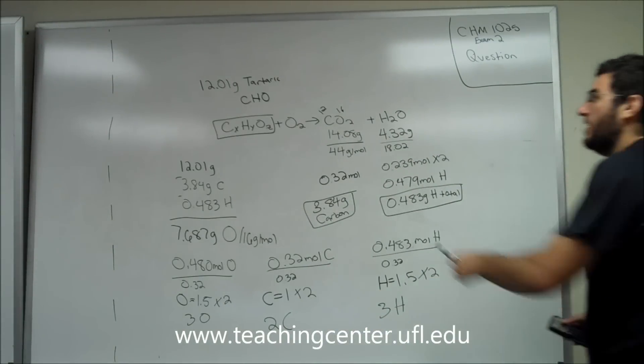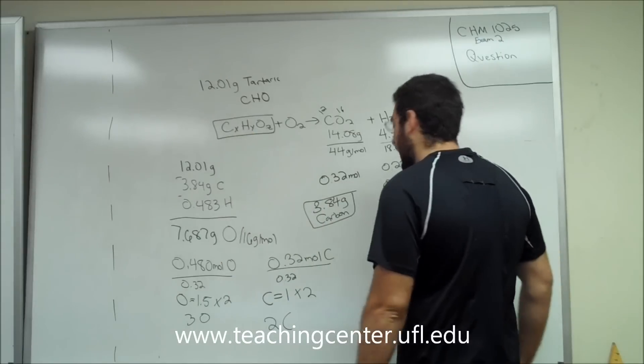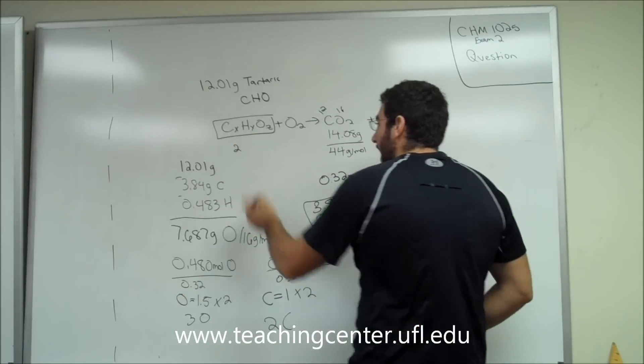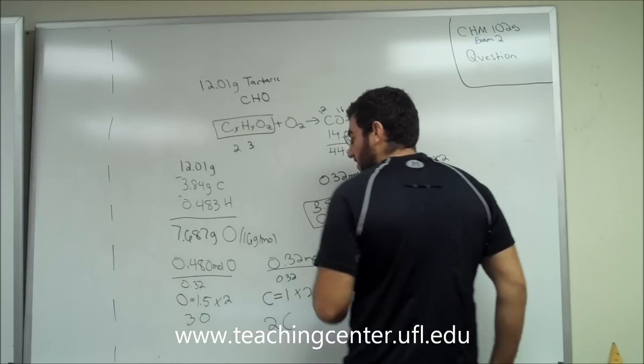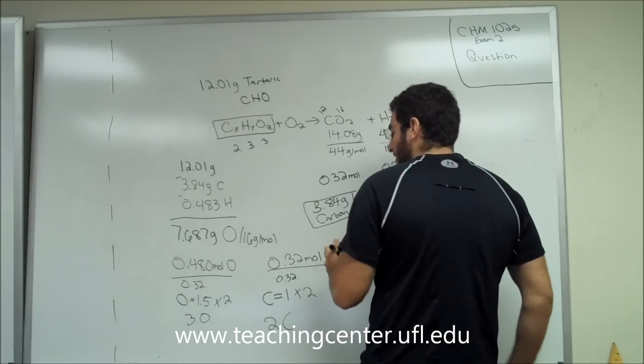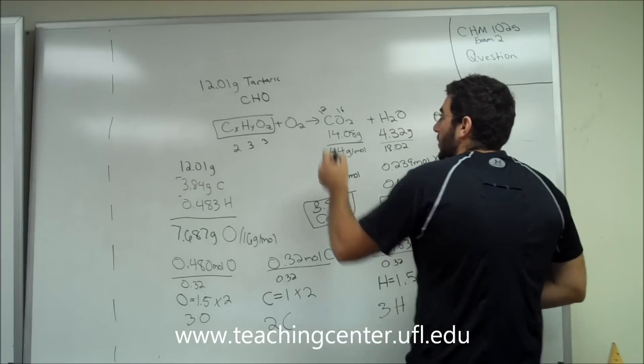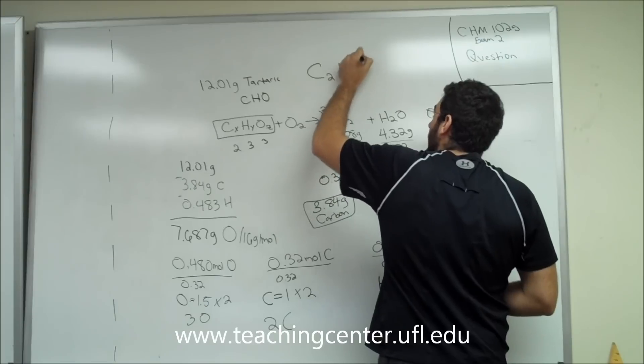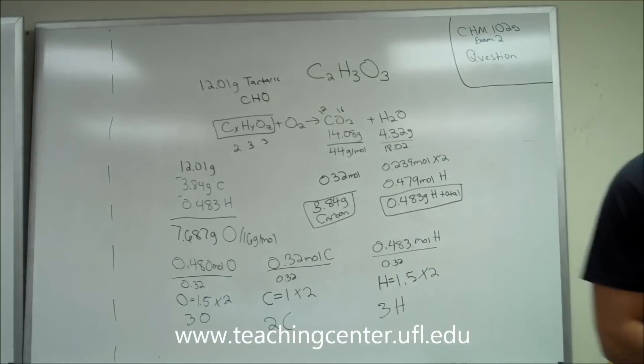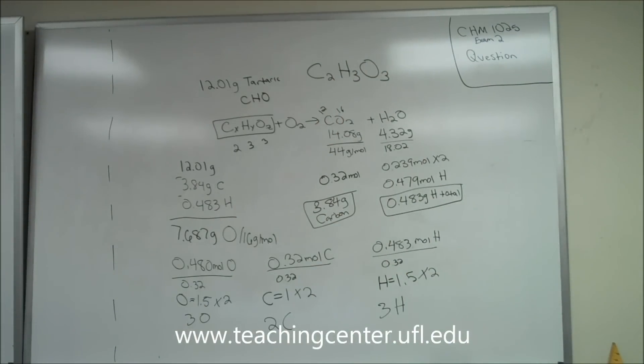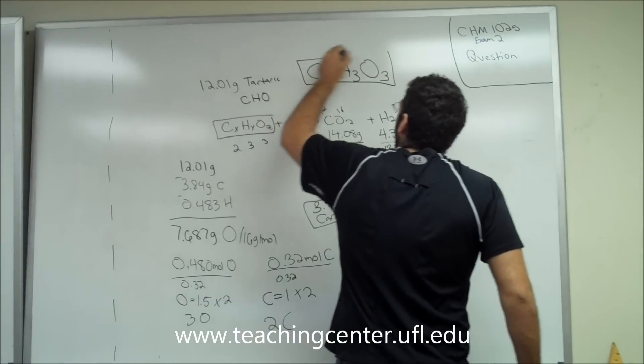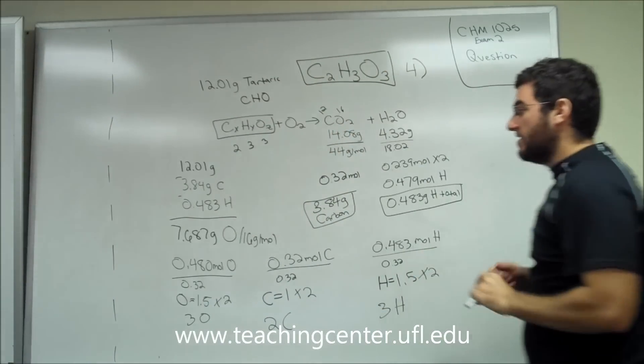So if we go back up here to our CHO and fill in for X, we know that X for carbon was 2. We know that 3 H's, and we know we had 3 O's. So to write this out, let's go ahead and write C2H3O3. And let's go to our answer choices, and yes, answer choice number 4 says C2H3O3, answer choice number 4.